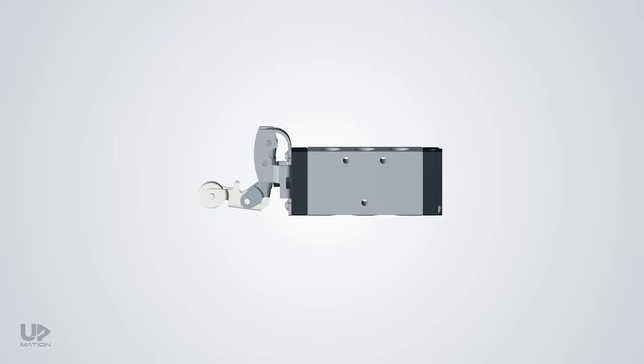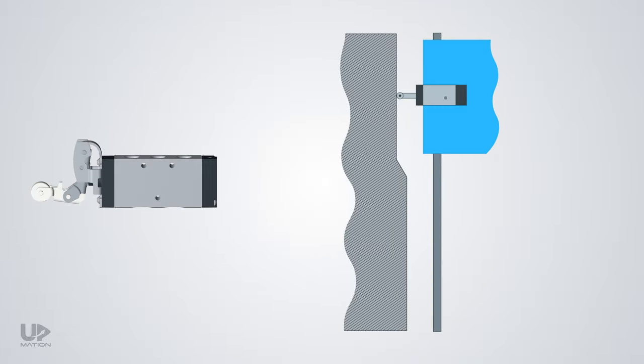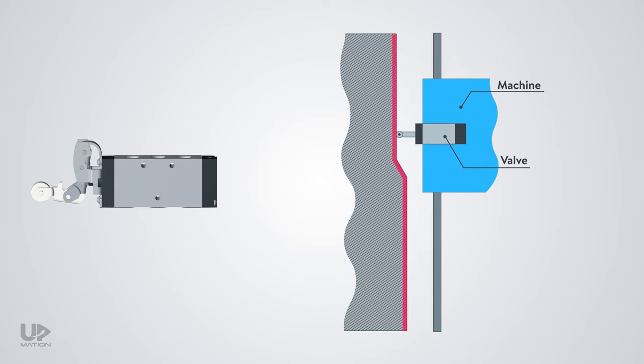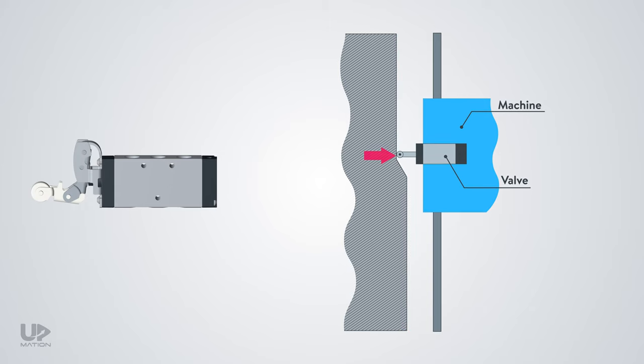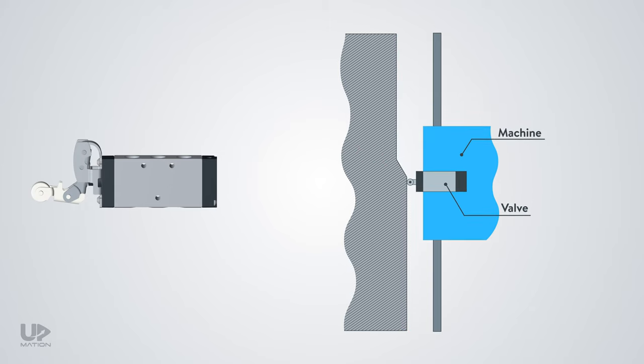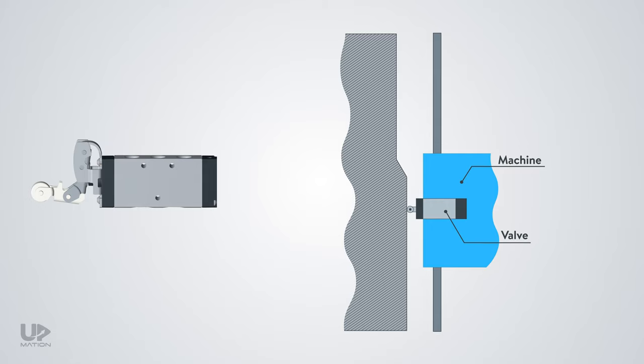An example of a mechanically actuated DCV is a roller operated directional control valve or cam operated directional control valve. For instance, the valve is fixed on a machine and as the machine moves, the roller senses an adjacent surface. In a particular position, it will operate the valve and move the spool to the other side.